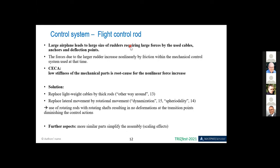Another aspect from the control system: the flight control rods. The same problem — large airplanes means large forces are required — particularly for the cables, anchors, deflection points, and all the system to get the force from the pilot to the control surface. They really did a clear TRIZ analysis and found a couple of solutions. They replaced the lightweight cable with rigid rods, and instead of lateral movement used rotational movement. A couple of inventive principles were used here, and these kinds of approaches are still used today in modern airplanes.